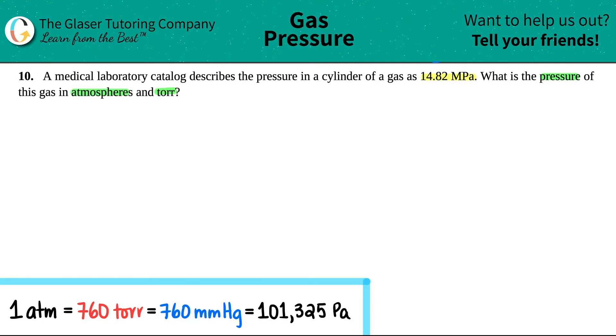Okay, so it looks like they gave me one pressure value and we just have to convert this pressure into different units. One in atmospheres and the other one in torr.